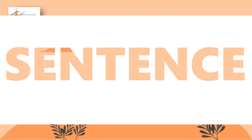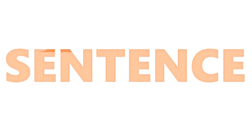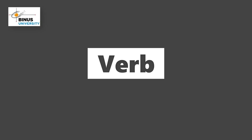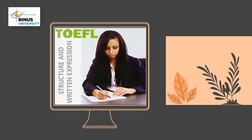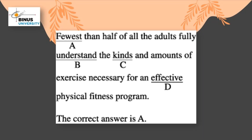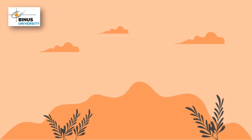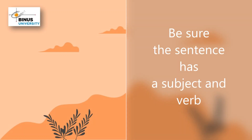In English, sentences are commonly structured with one subject and one verb, and it is important for you to be able to differentiate the subject and verb in the sentence. Also, in paper TOEFL test, you will find these kind of questions about the structure of sentences. But before going further, make sure that you understand that a sentence always has a subject and a verb.